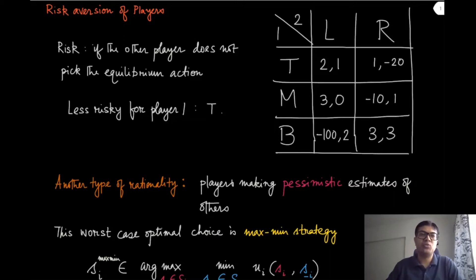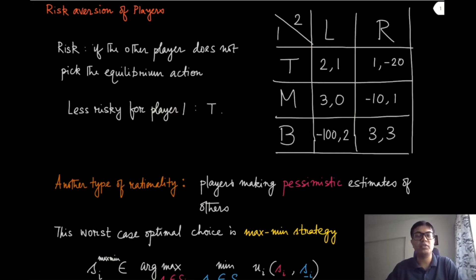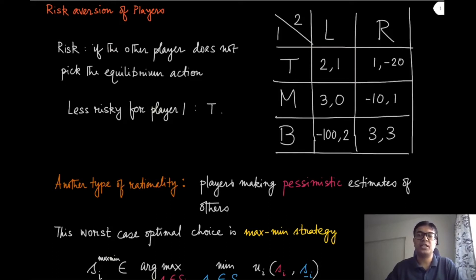While discussing Nash equilibrium we had made a very crucial assumption that all the players are rational and intelligent. What rationality means is that they are always trying to maximize their own utilities, and intelligence means that they understand the rules of the game and will always pick the most optimal thing, like the game theorist. So in a game where Nash equilibrium exists, a rational and intelligent player will always find it and has the computational ability to find it and will play according to that Nash equilibrium.